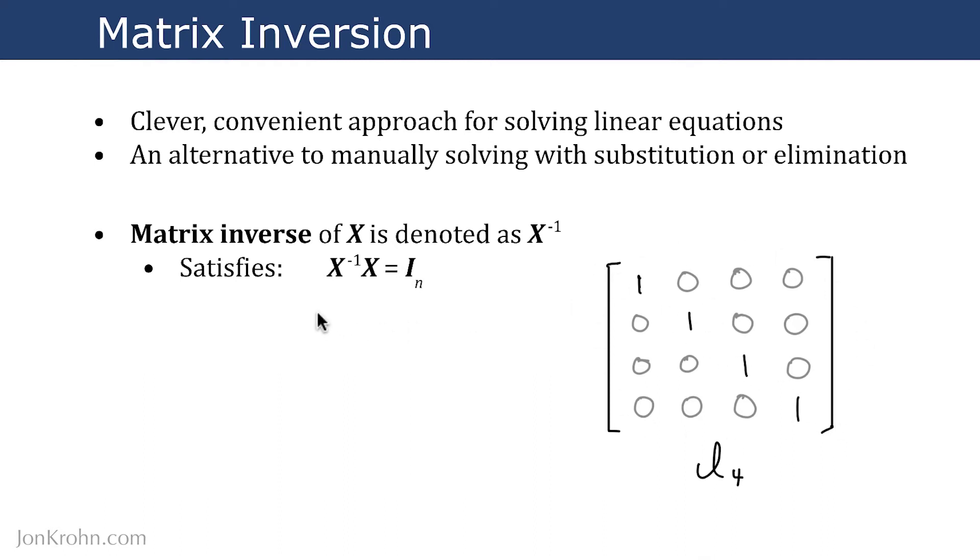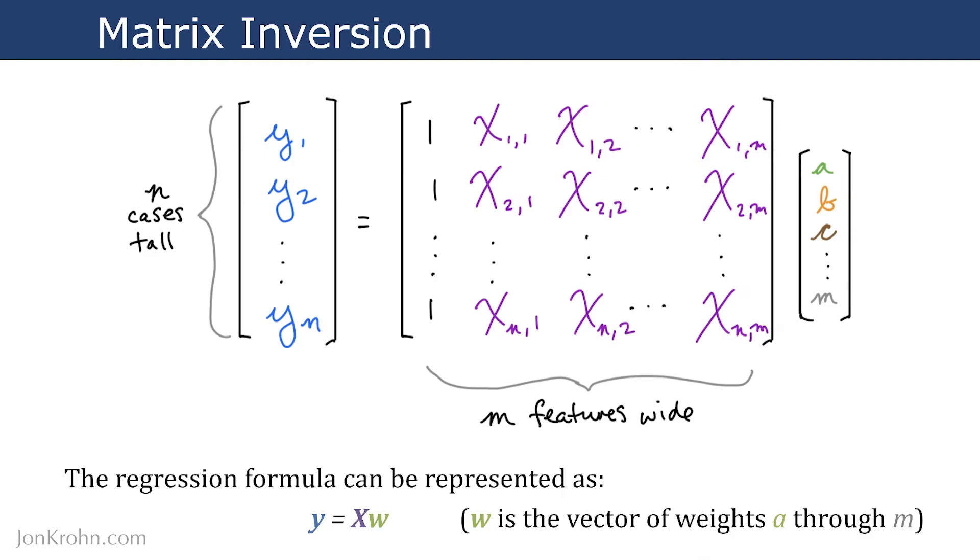To appreciate the significance of matrix inversion and how it can be useful for solving for unknowns, let's do a small-scale example. This is going to be a regression-like example. We already looked in an earlier video on matrix multiplication at this way of framing a regression problem where we have some outcome, say house prices as y, and we're predicting house prices using a matrix of features represented by a matrix x.